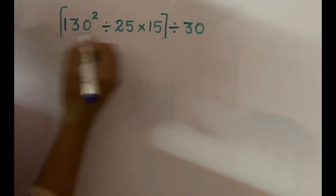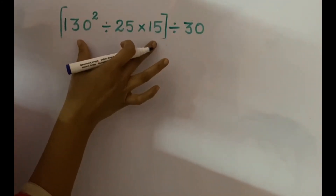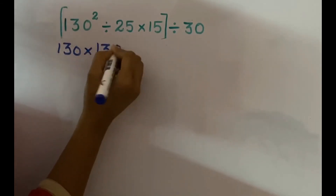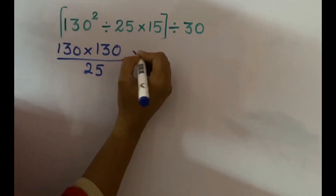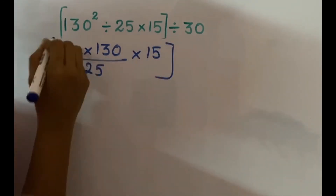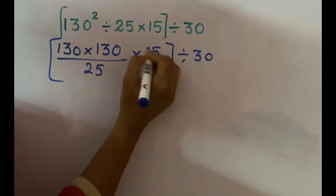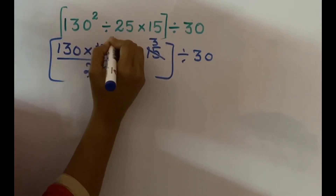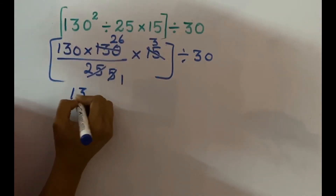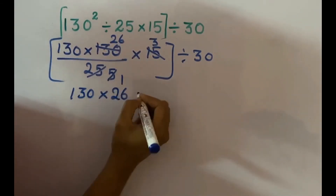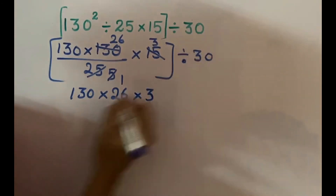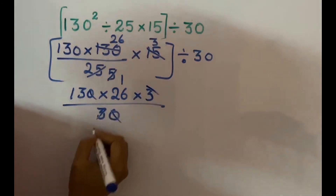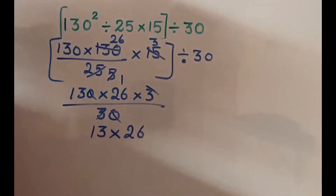For the third expression, first we have to do the operation inside the bracket — there's a square there. So, 130 squared divided by 25, multiplied by 15. We do this inside the bracket first. Let's cancel: 5, 3's, 5, 5's, 5, 1's, 5 — 26's are 1, 13. Then outside the bracket we have divided by 13. Cancel the zeros: 3, 3. The remaining is 13 multiplied by 26.